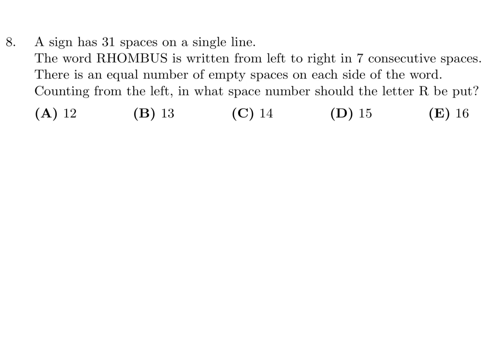A sign has 31 spaces on a single line. The word RHOMBUS is written from left to right in seven consecutive spaces. There is an equal number of empty spaces on each side of the word. Continuing from left, in what space number should the letter R be? First of all, RHOMBUS is seven letters. They're saying it's in the middle, equal number of spaces on each side. So 31, we've got to subtract 7, and when you do that it's 24. Then there's equal on each side, so on each side there'd be 12. So there's 12 spaces up until this point, and then the R is the 13th space. The answer is B.